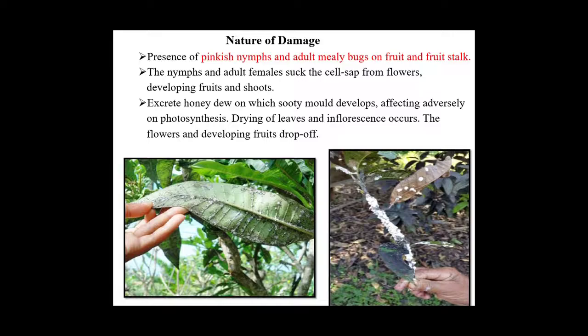Nature of damage by mealybug: nymphs and adult mealybugs are found on fruit and fruit stalks. Nymphs and adult females suck cell sap from flowers, developing fruits, and shoots. They also excrete honeydew on which sooty mold develops, adversely affecting photosynthesis. Drying up of leaves and inflorescence occurs, and flowers and developing fruits drop off.